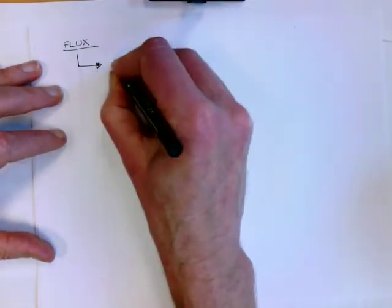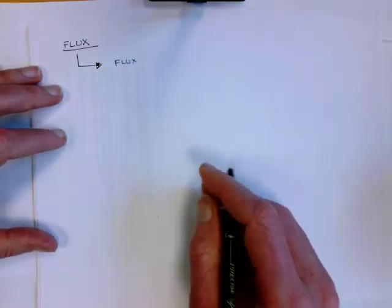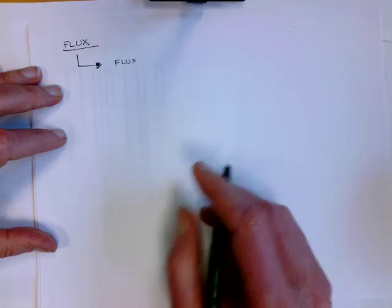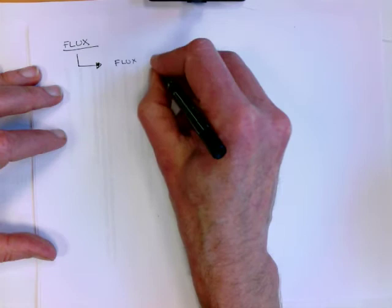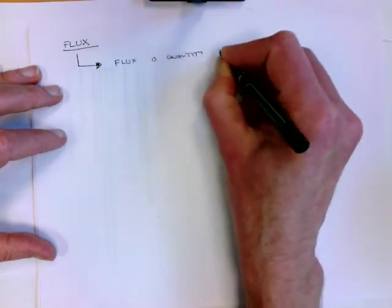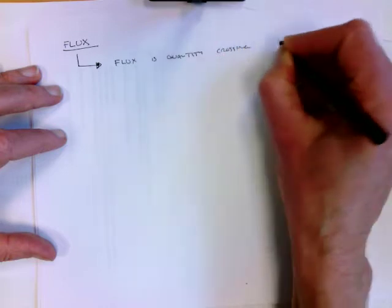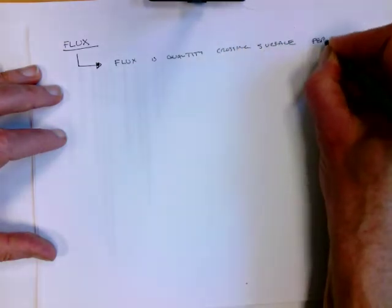Qualitatively speaking, flux is defined for a given surface, and flux is the amount of some physical quantity that crosses that surface per unit time. It's a quantity crossing a surface per unit time.